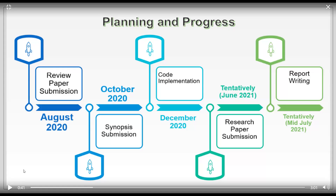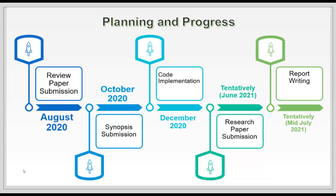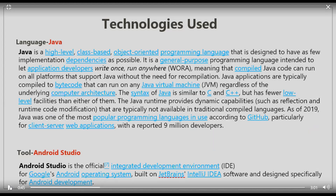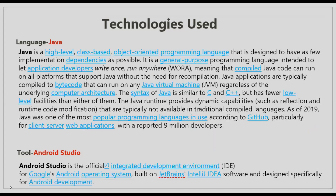This was our planning and progress through our project from August 2020 to our tentative submission. Coming to technologies used: we used Java, a high-level, class-based, object-oriented programming language designed to have as few implementation dependencies as possible. It is a general purpose language intended to let developers write once and run anywhere, meaning compiled Java code can run on all platforms that support Java without recompilation.